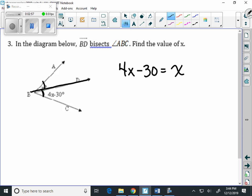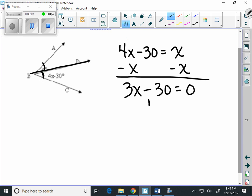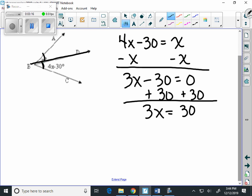Solve it the way your Algebra 1 teacher taught you. I'm going to subtract the X over here. So, we get 3X minus 30 equals 0. Add the 30 to both sides. And we have 3X equals 30. And finally, divide both sides by 3. And X equals 10.